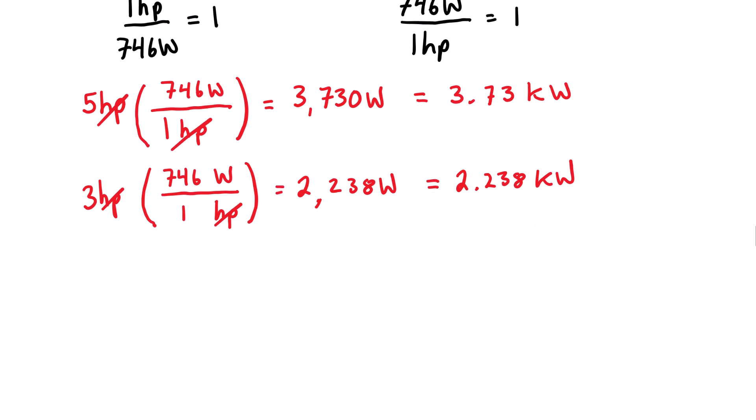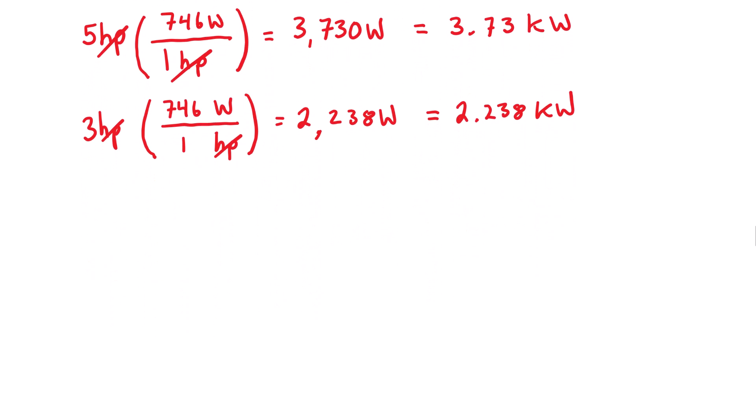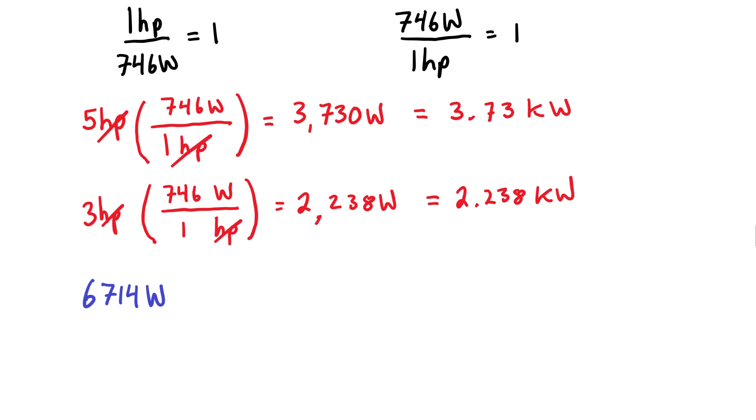Okay, so we can go from horsepower to watts. Let's try going from watts to horsepower. So let's say that someone gives you a problem where you have a motor that is 6,714 watts. Well, we're just going to multiply this by unity again, and in this case we see that we have to cancel out watts, so we're going to put that on the bottom. Horsepower is going to go on the other side, and we know it's 746 watts to 1 horsepower.